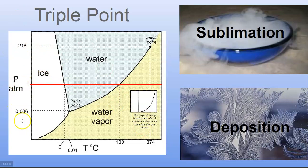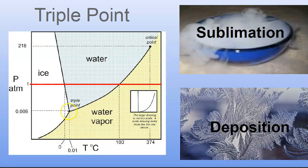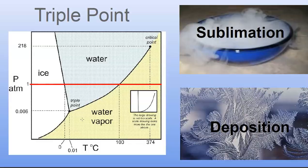The scale on this phase diagram is really weird — 0.006, 1, and 218 atm on the pressure axis; 0, 0.01, 100, and 374°C on the temperature axis. They've stretched it to zoom in on those interesting points. Just understand that the triple point exists. I don't really need you to do anything with it on a test, but it's a fascinating thing.